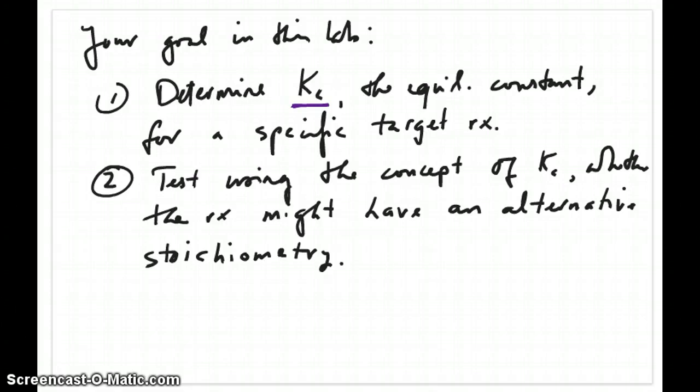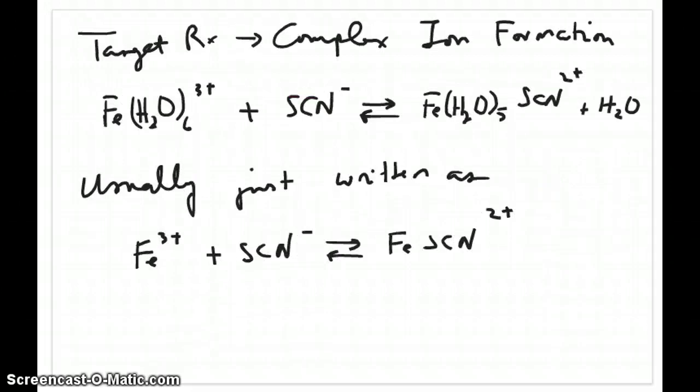And then what you're going to do is test using the concept of the equilibrium constant whether it's possible for the target reaction to happen with alternative stoichiometry.